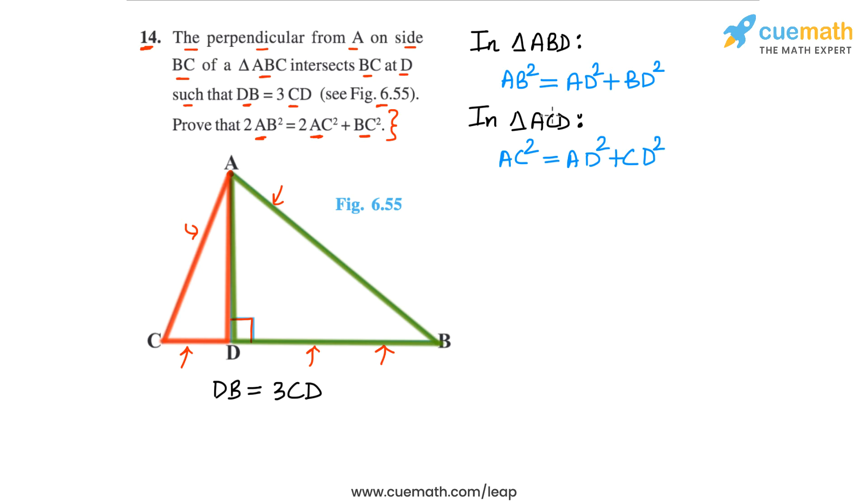Now what we want is AB square on the left side and AC square on the right side. So let's subtract these two equations. Let's call this equation 1 and this equation 2. How did I decide that we should subtract? On the right side, we have AD square and AD square, but in the final relation we have no AD square term.